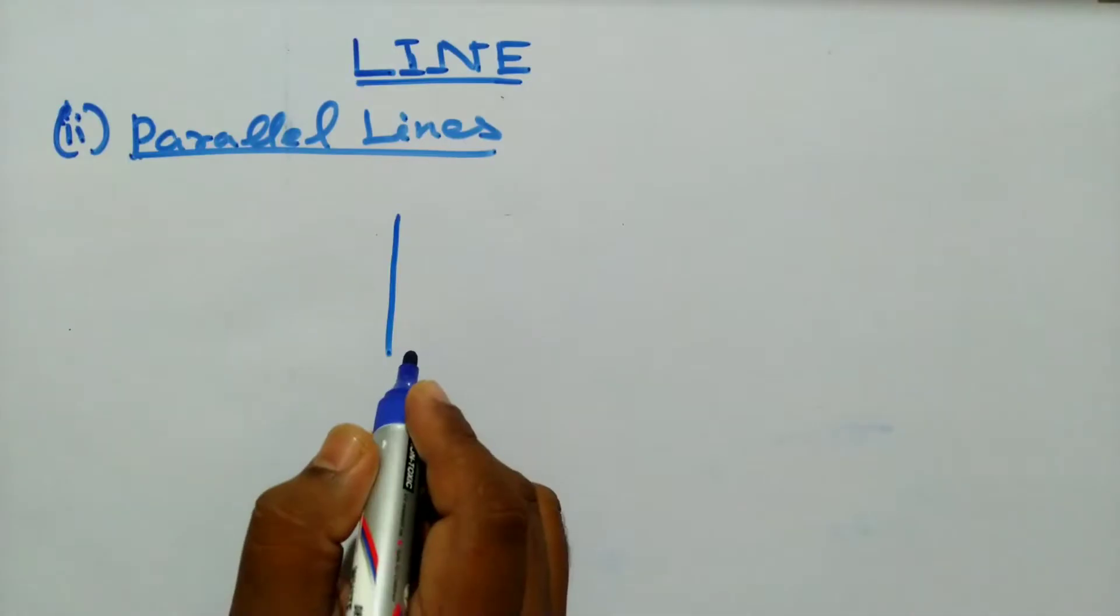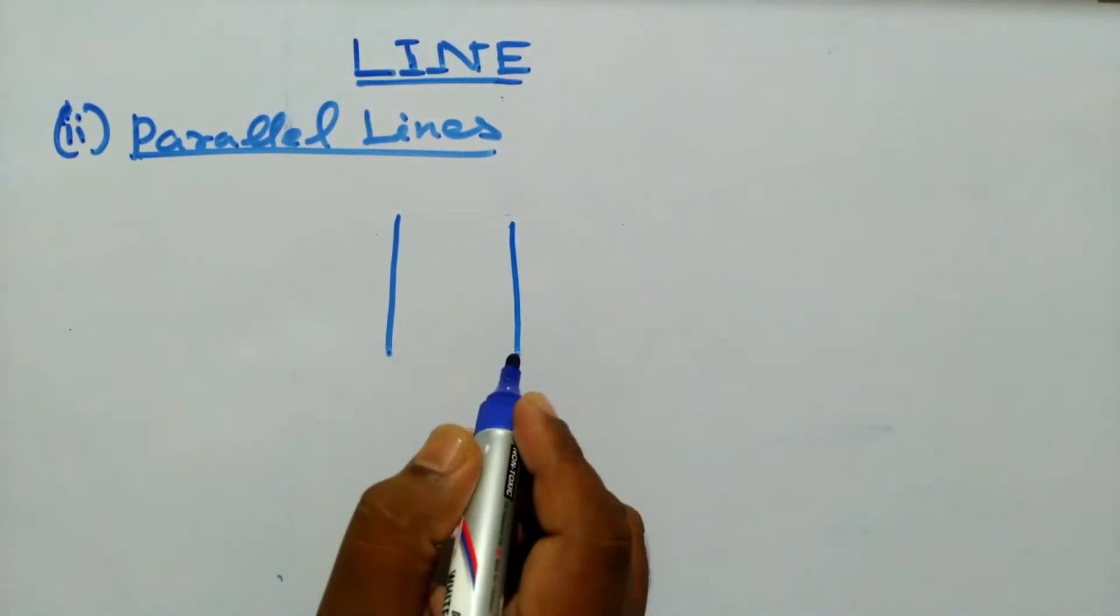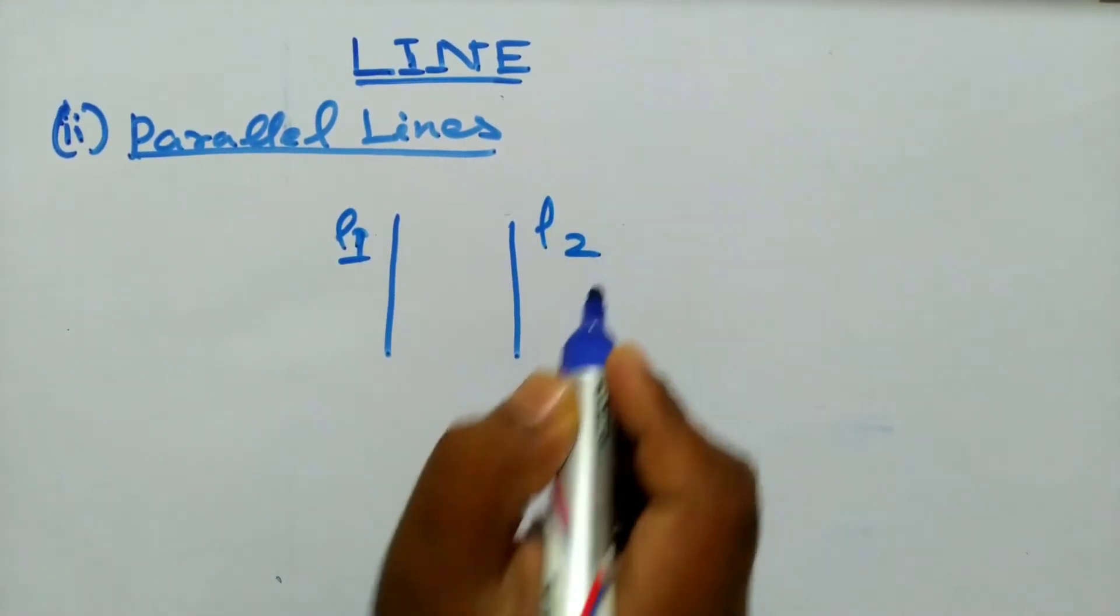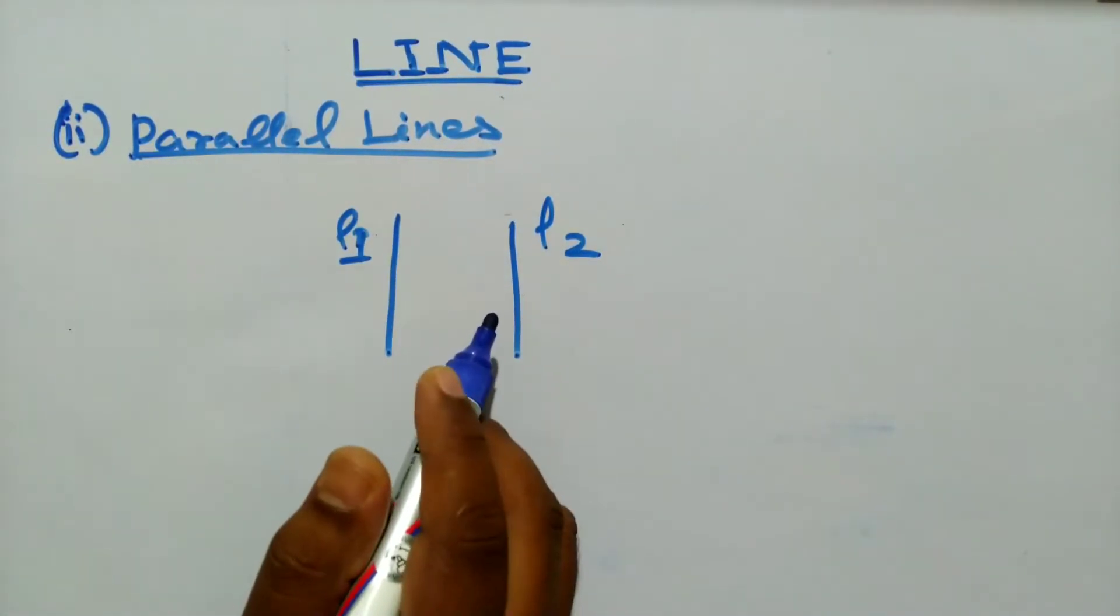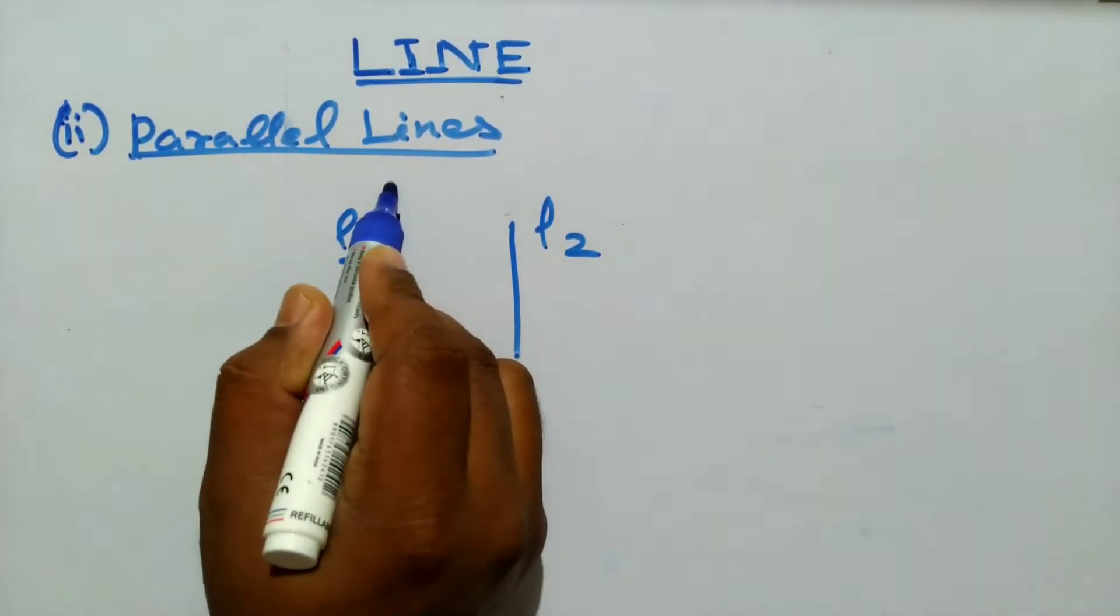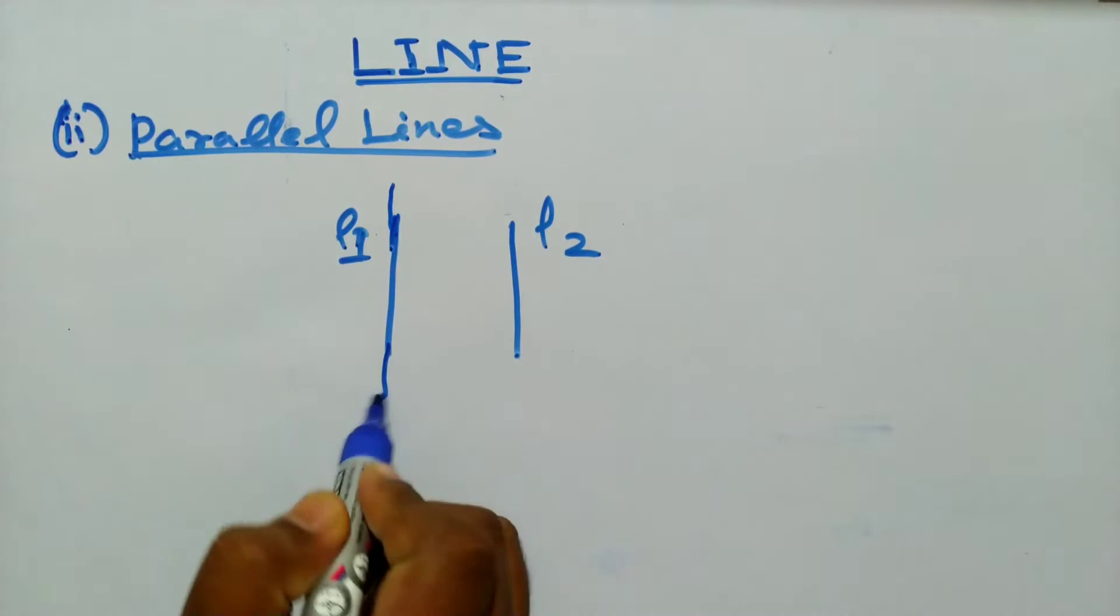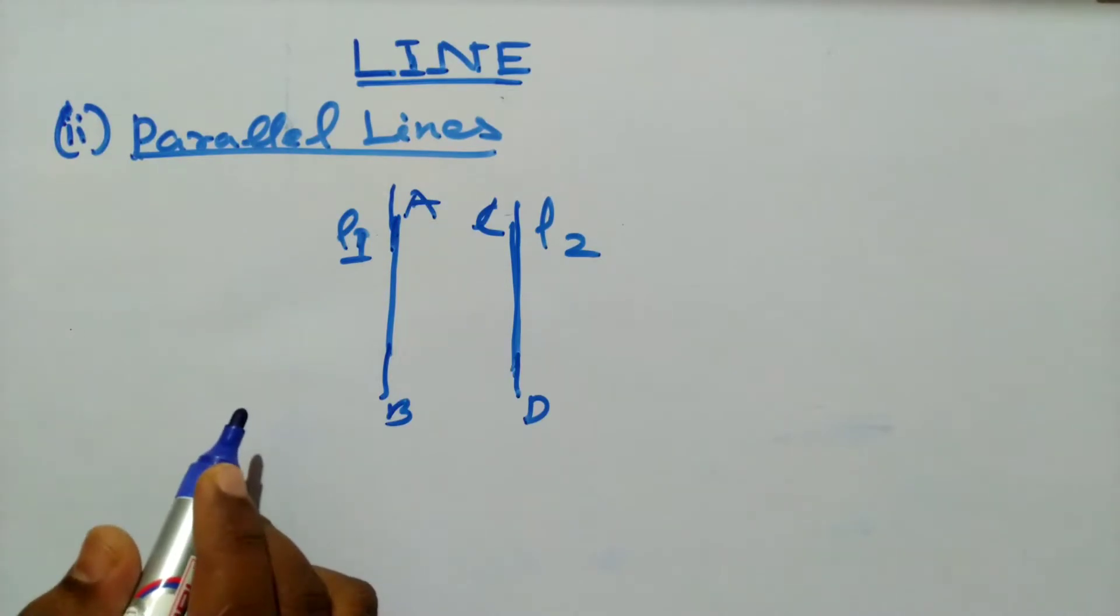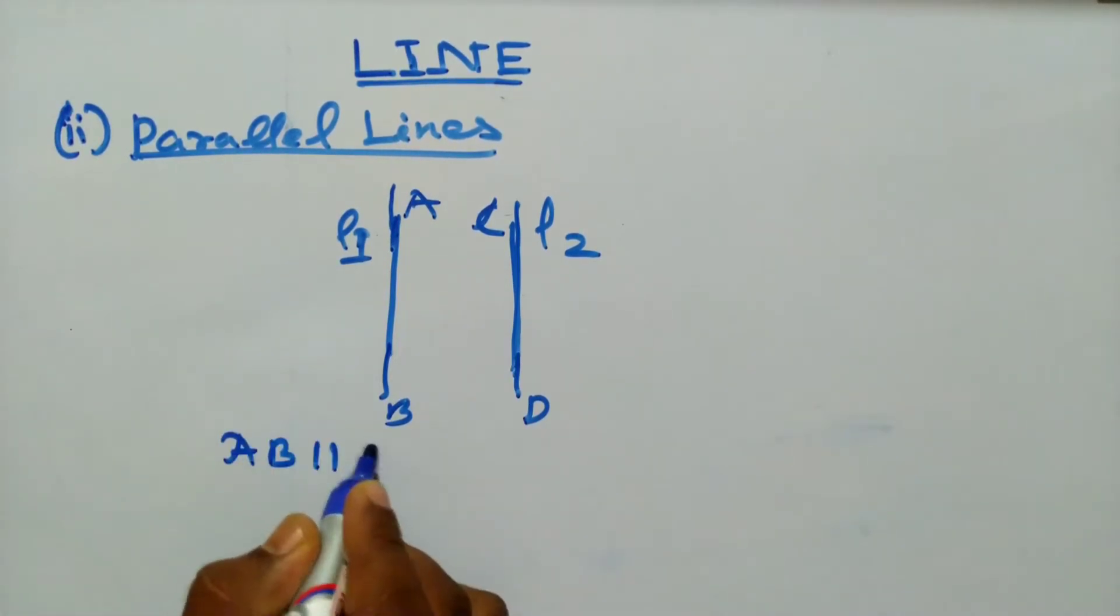First draw a line, again draw another line. Name the lines l1 and l2. These two lines which do not meet are said to be parallel lines. If we expand this line they never meet. If AB is parallel to CD we can write AB parallel CD. This symbol is called parallel symbol.